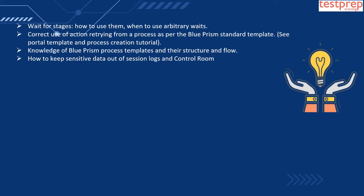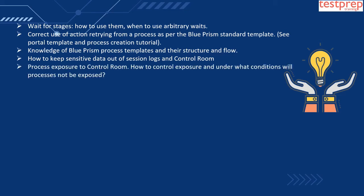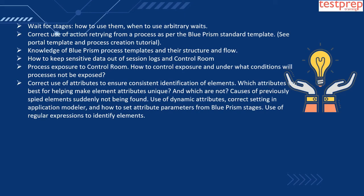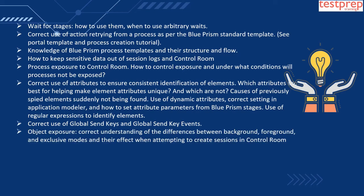Thirteen, how to keep sensitive data out of session logs and control room. Fourteen, process exposure to control room: how to control exposure and under what conditions processes will not be exposed. Fifteen, correct use of attributes to ensure consistent identification of elements, which attributes are best for making element attributes unique and which are not, causes of previously spied elements suddenly not being found, use of dynamic attributes, correct settings in application modeler, and use of regular expressions to identify elements.